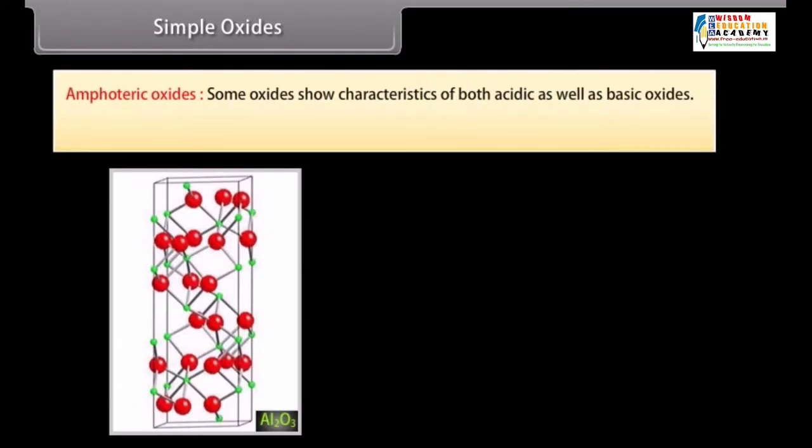Amphoteric oxides. Some oxides show characteristics of both acidic as well as basic oxides. For example, ZnO, Al2O3, GeO and PbO2.